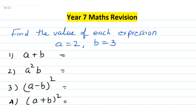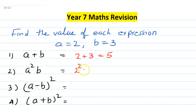Let's put a equal to 2 and b equal to 3. So 2 plus 3 equals 5. Now a squared times b — a squared means 2 squared, and there is no sign between a and b so we put a times sign. 2 squared means 2 times 2, that is 4, and 4 times 3 equals 12.